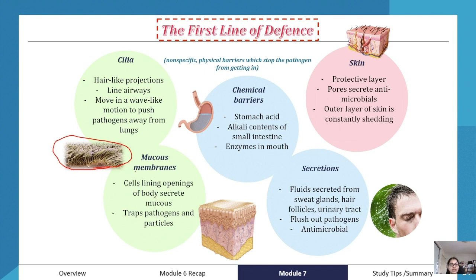The second physical barrier is mucus membranes. Mucus membranes line the openings of the body — cells lining those openings secrete mucus, and that mucus traps pathogens and particles. This is important in ensuring the pathogen doesn't get through to your lungs. We have this in our noses, for example.